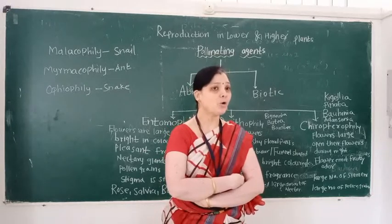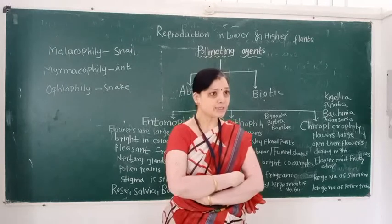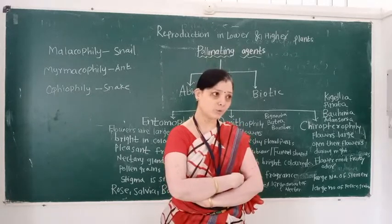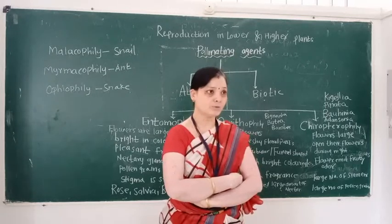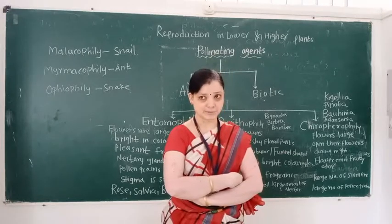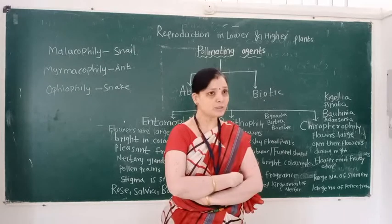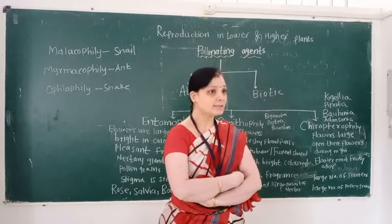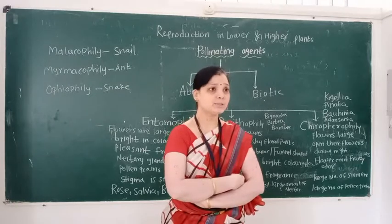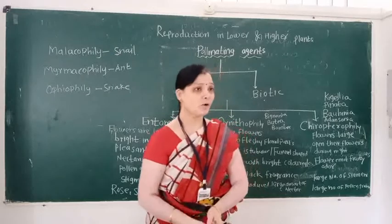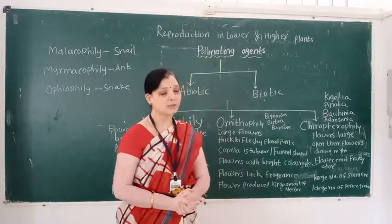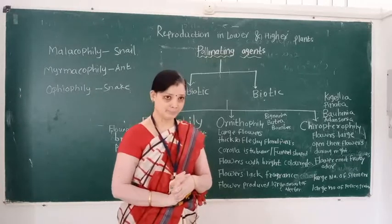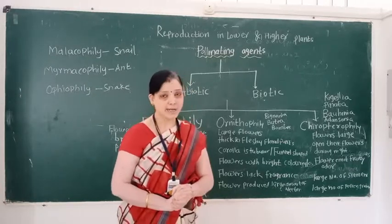Abiotic means non-living factors which transfer pollen grains from anther to receptive stigma. These are called abiotic pollinating agents. In the previous lecture we also learned which are the abiotic pollinating agents and their types. The first abiotic agent is wind, and the second is water. Wind pollination is called anemophily, and water pollination is called hydrophily.